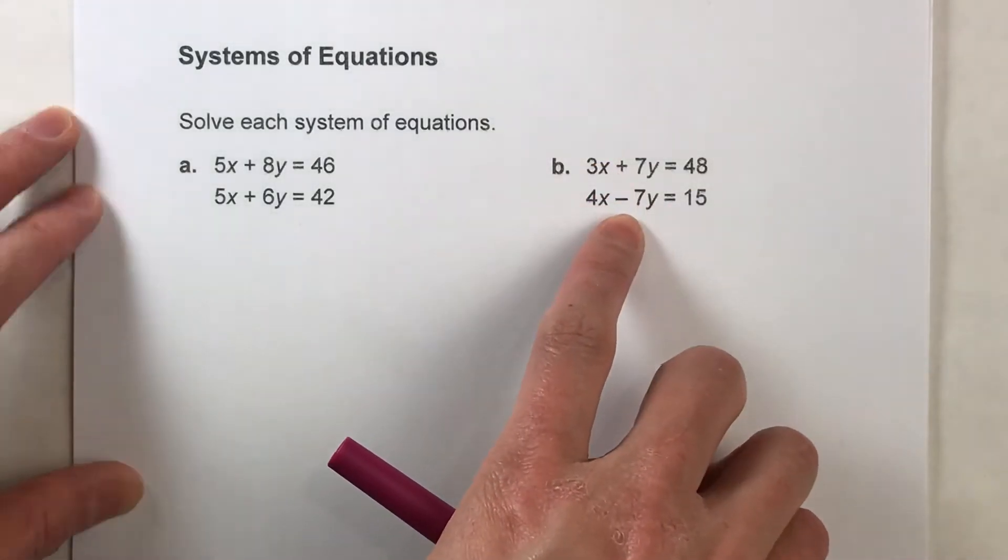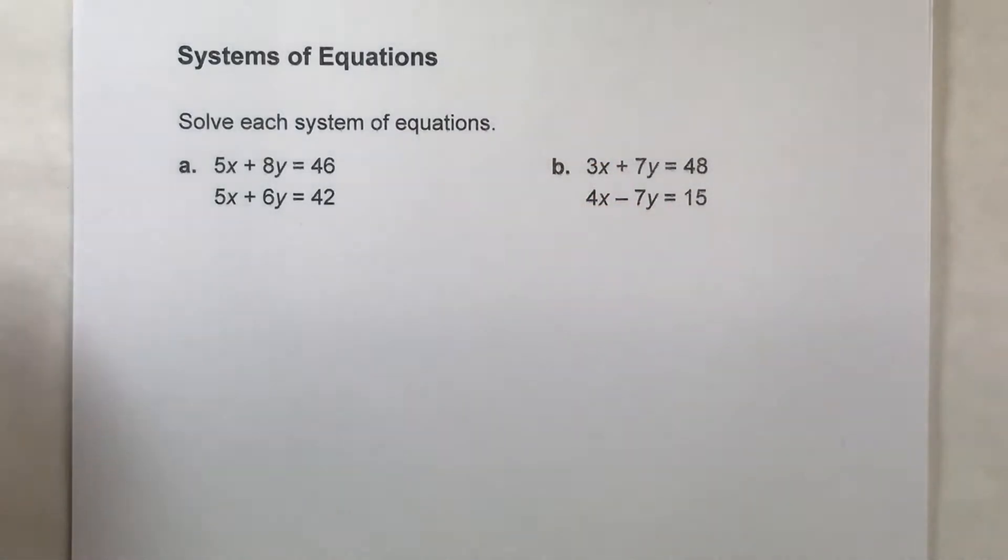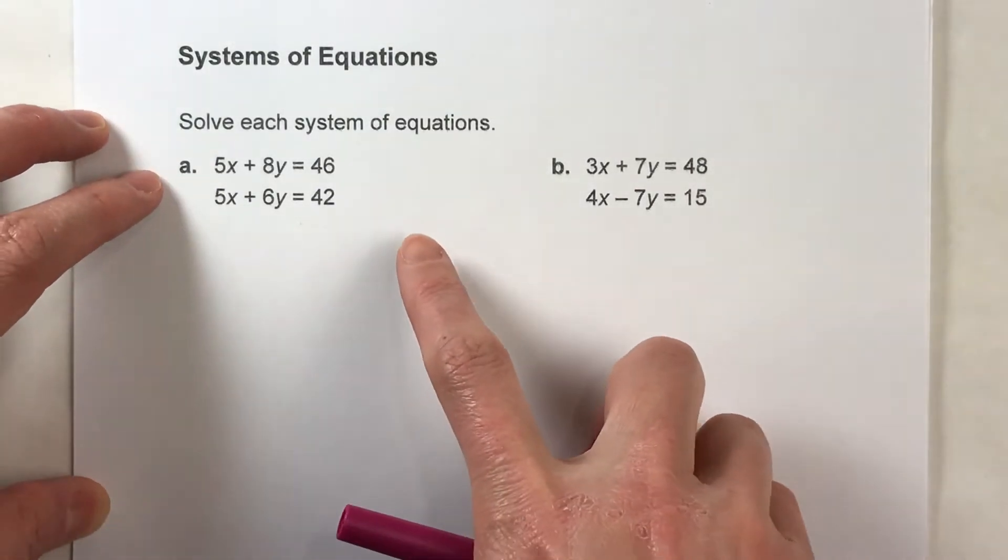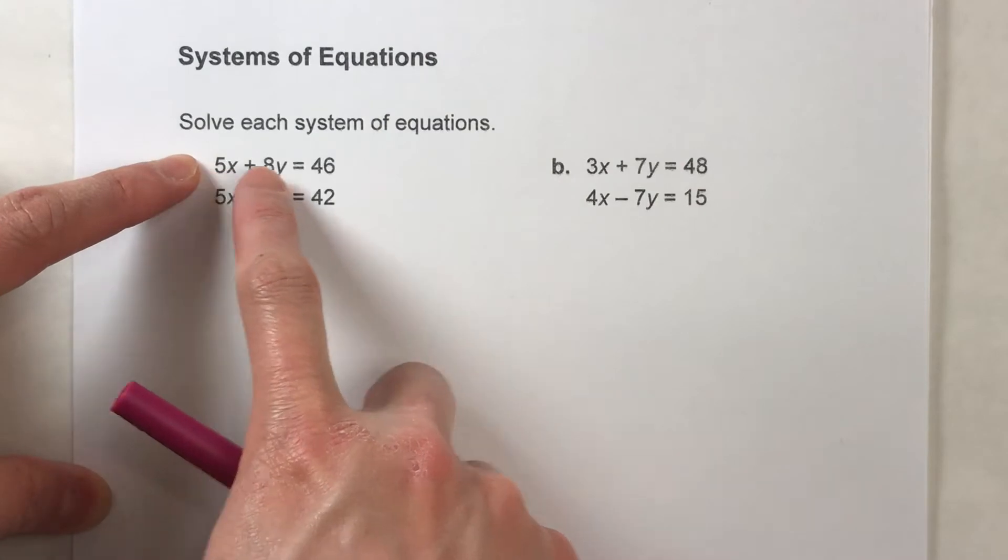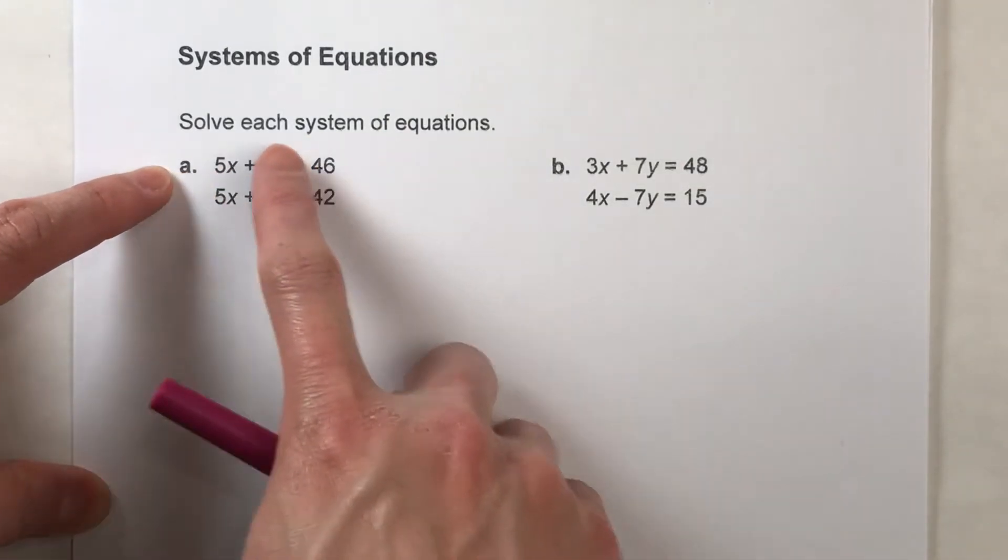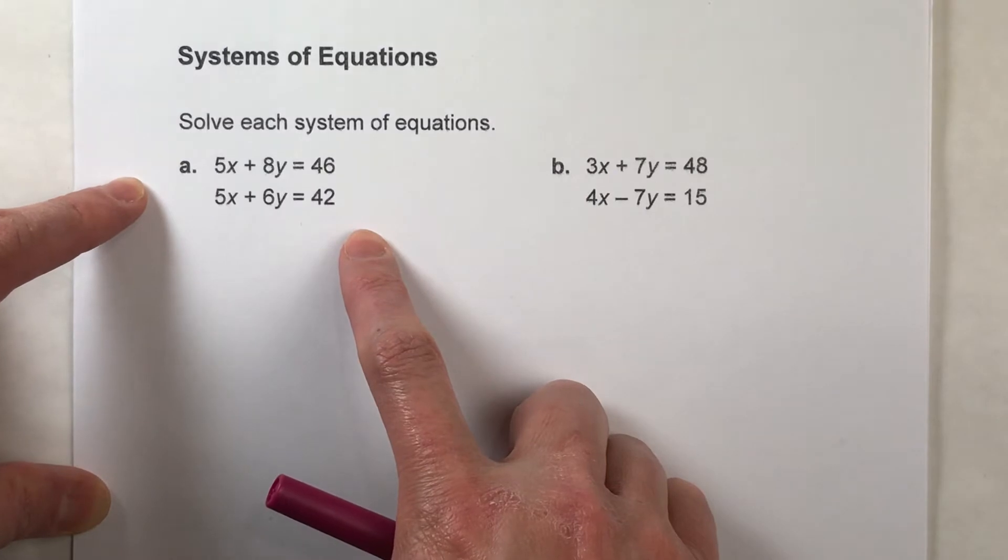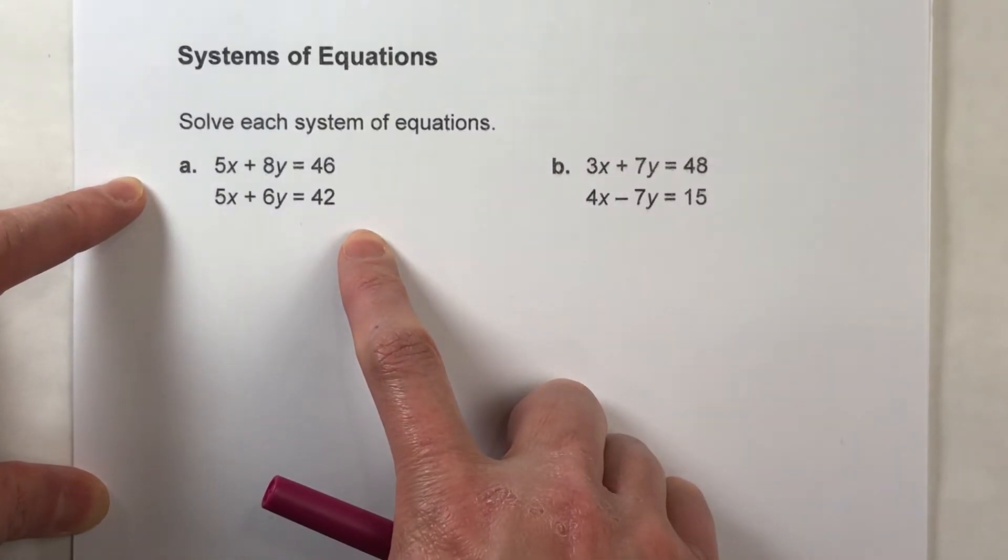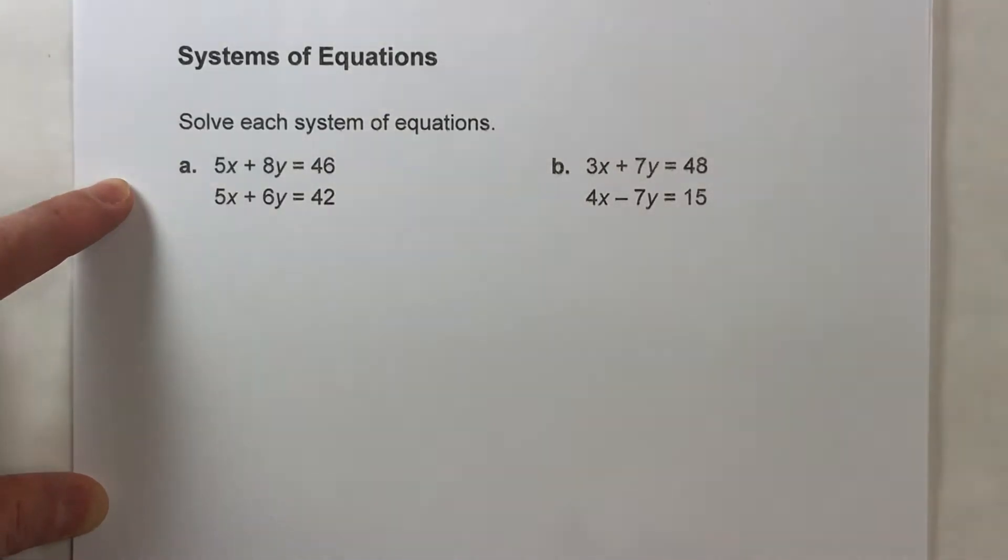For example, positive 7 and negative 7. This method is called the elimination method. And the reason why it's called the elimination method is because you can't solve an equation when there's an x and y in it. However, if you can eliminate one variable from the equation, then you can solve for the remaining variable. And that's what we're going to do.